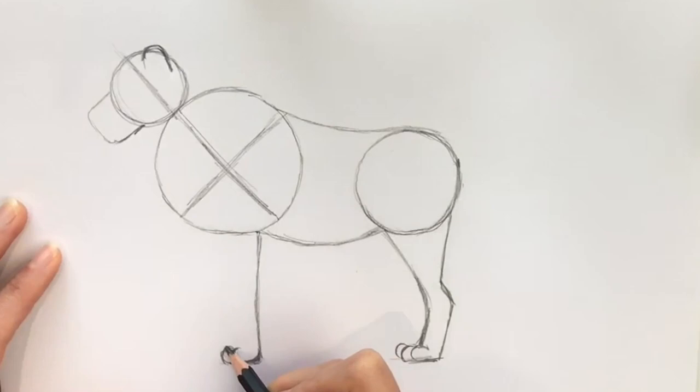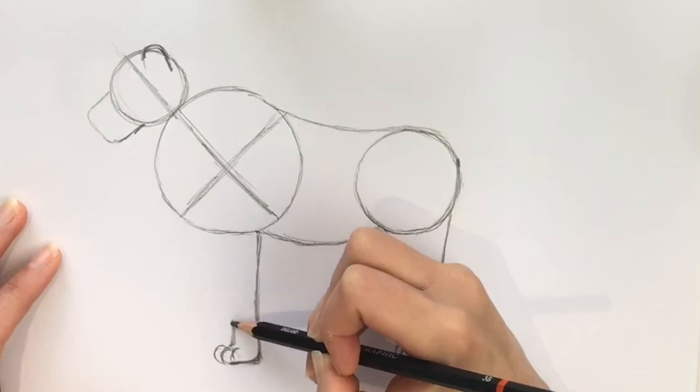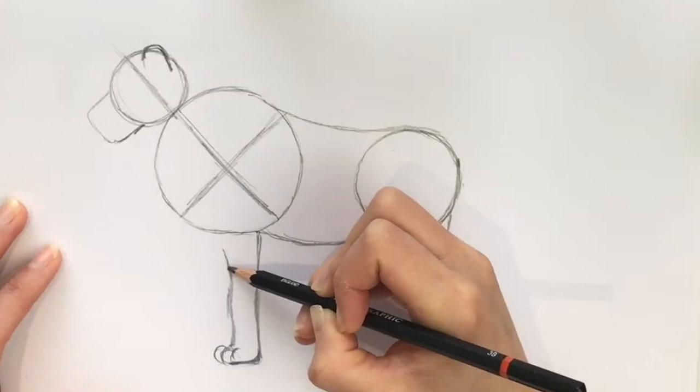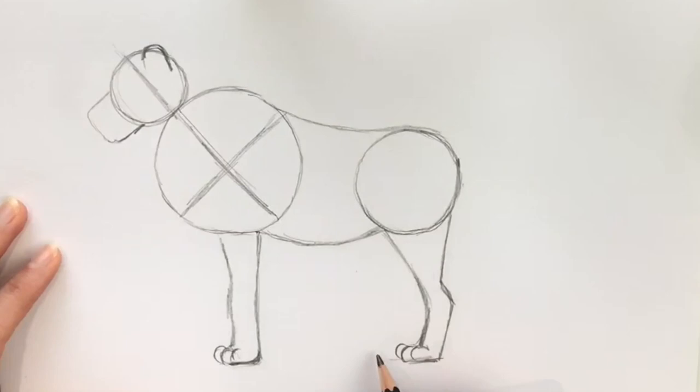And then the leg coming round like so. Now the other hind leg, so we're going to put where the foot's going to be. It's going to be slightly higher than this one because of the perspective. So if we just draw a line there, that's where the foot's going to hit the ground, and the same for the front.